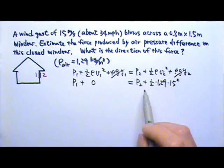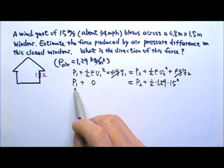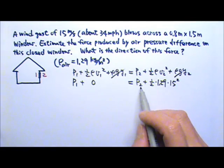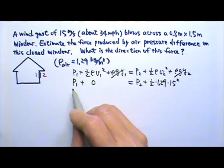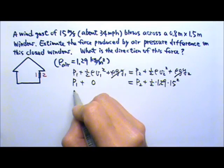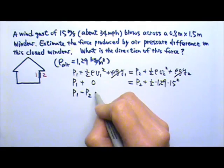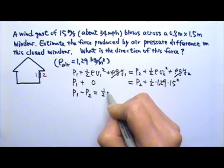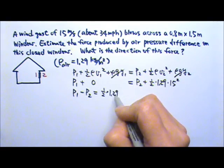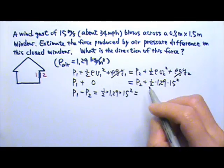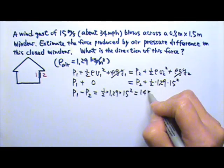We have one equation with two unknowns, P1 and P2, so we cannot find P1 or P2. But luckily, we only need to find the pressure difference. We can easily find P1 minus P2. If I just subtract P2 on both sides, I get 1.5 times 1.29 times 15 squared, which gives me about 145.